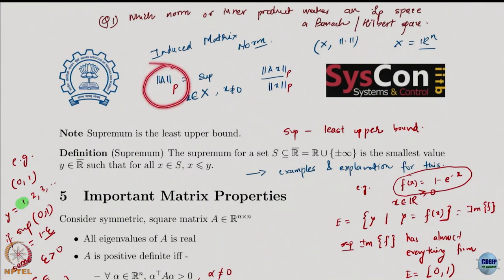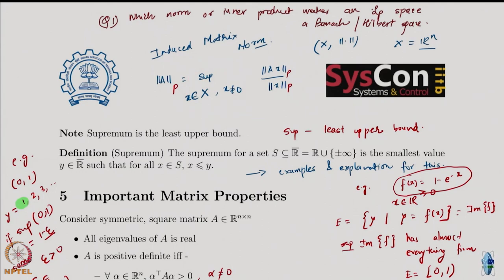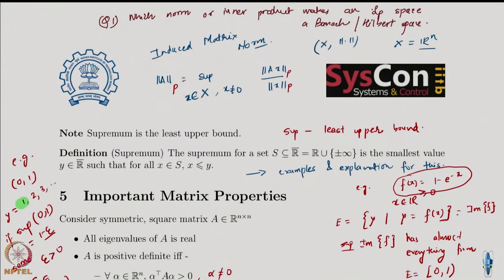What is the matrix norm for a matrix A? This matrix does not need to be square or invertible or anything like that — you can compute the norm for any matrix. The P norm for a matrix is basically defined using the supremum over x not equal to 0 of the P norm of Ax divided by the P norm of x. That is exactly how you define it.